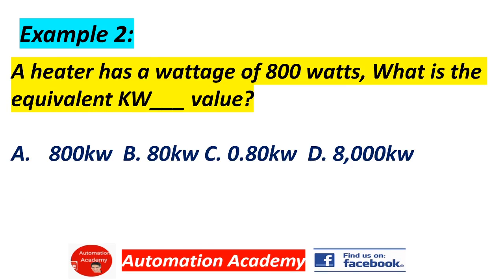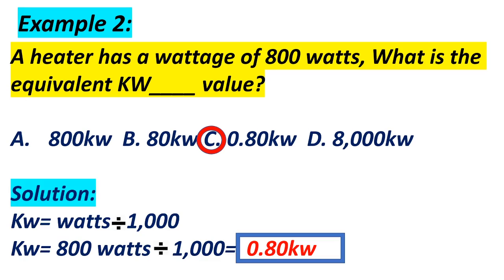A heater has a wattage of 800 watts. What is the equivalent in kilowatts? A) 800 kW, B) 80 kW, C) 0.80 kW, D) 8,000 kW. Answer: C, 0.80 kilowatt. Solution: kilowatt equals watts divided by 1,000 — so 800 watts divided by 1,000 equals 0.80 kilowatt.